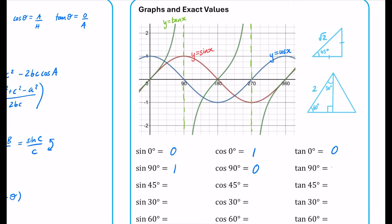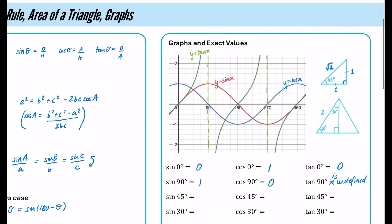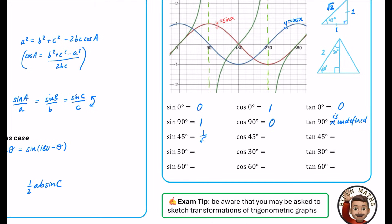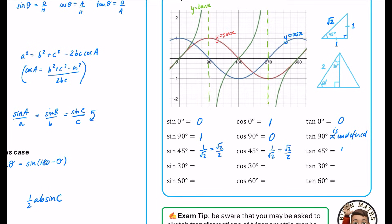Tan of 90 is undefined at that point — it doesn't have a value, we can't evaluate it. For 45 degrees we use an isosceles right-angle triangle with two sides of length 1. Using Pythagoras, the hypotenuse is root 2. Sine 45 is opposite over hypotenuse, which is 1 over root 2 (rationalised as root 2 over 2). Cos 45 is also 1 over root 2. And tan 45 is opposite over adjacent, which is 1 divided by 1, which is just 1.